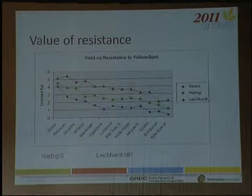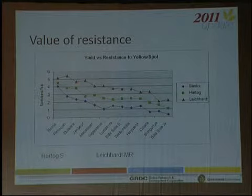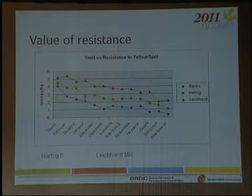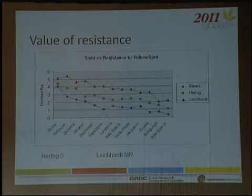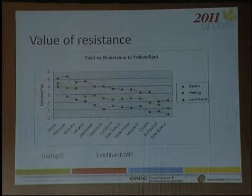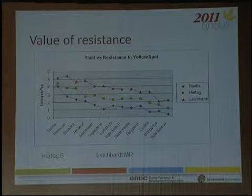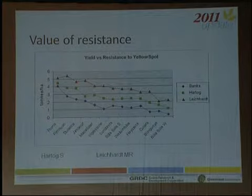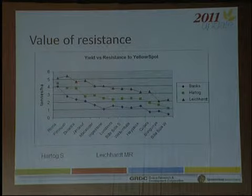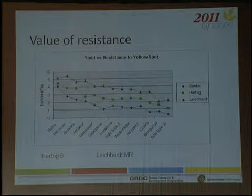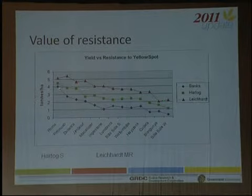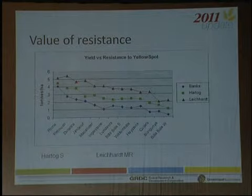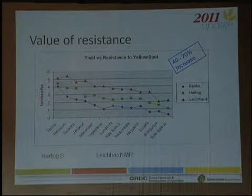I want to demonstrate how important resistance is. Looking at Leichhardt (the brown line) and Hartog (the green line) — Hartog we regard as susceptible, Leichhardt as moderately resistant. Leichhardt was developed from Hartog by crossing in a yellow spot resistance from a Brazilian variety with two doses of Hartog. In the absence of yellow spot the yields are very comparable. This data comes from Stage 3 trials across South Queensland in the 1998 yellow spot epidemic year. The moderately resistant variety was at the top of every site, out-yielding Hartog by about 16% at one end and around 106% at the other — with a 40–70% increase in yield overall attributable to improved resistance.